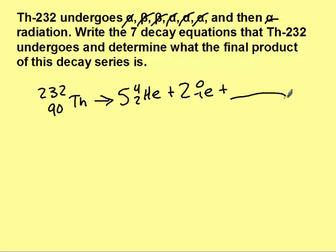So just like we've done before, 5 times 4 is 20. 2 times 0 is 0. So 20 plus 0 plus something gives you 232. That's 212.